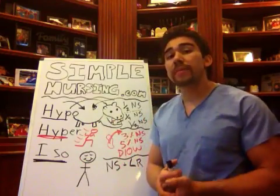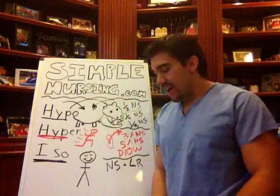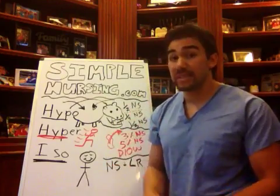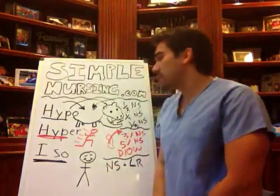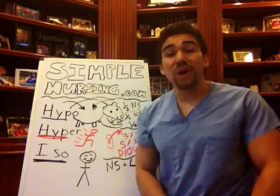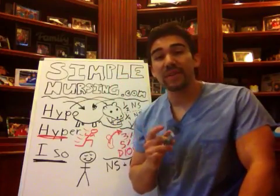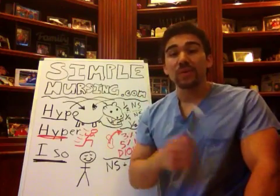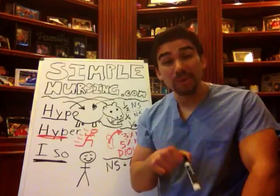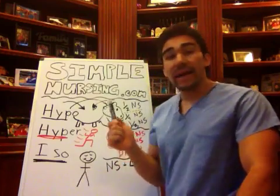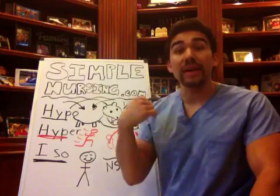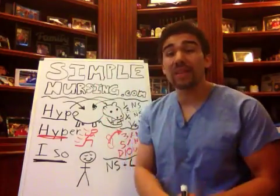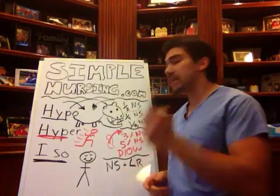So how do you remember all the different numbers that all the different IV solutions come in? I'm going to break it down very simply. I actually got this wrong on a test and was very mad at myself, because I thought that half NS was a hypertonic solution when it's actually a hypotonic solution. So I committed to memory a simpler way to remember these, because the test will throw out a lot of IV solutions and it's really difficult. So let's get into it.